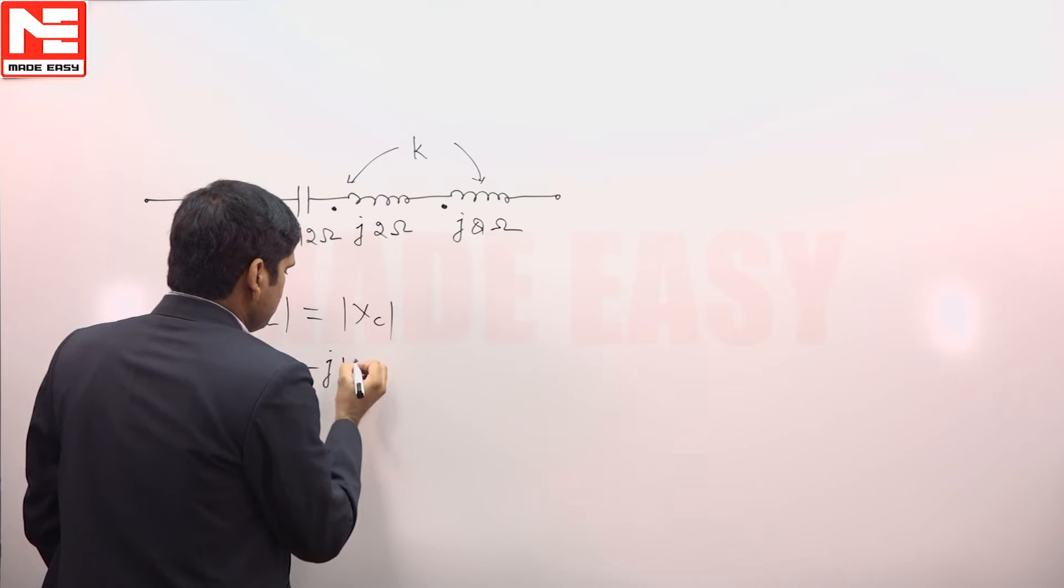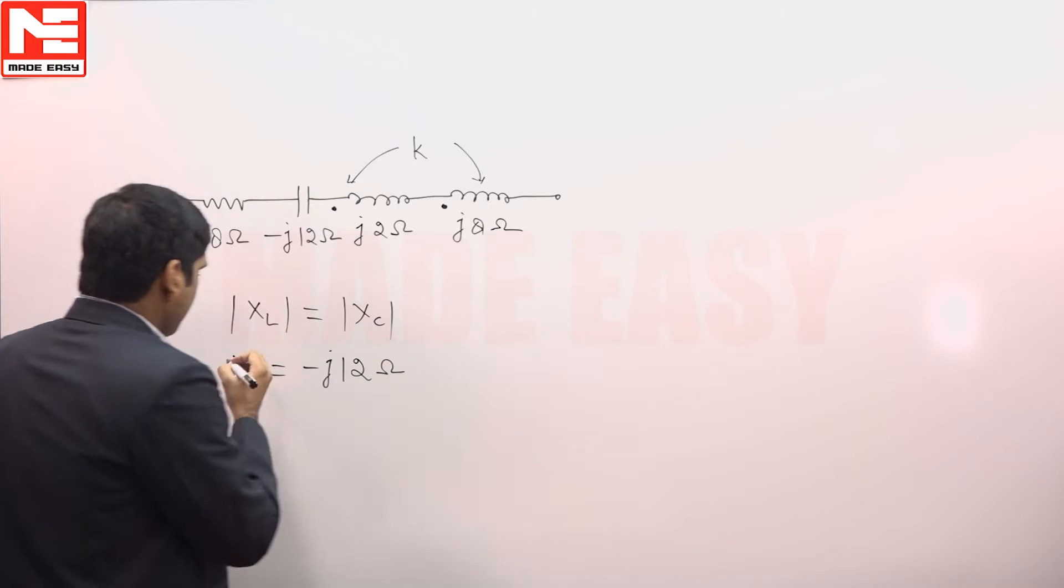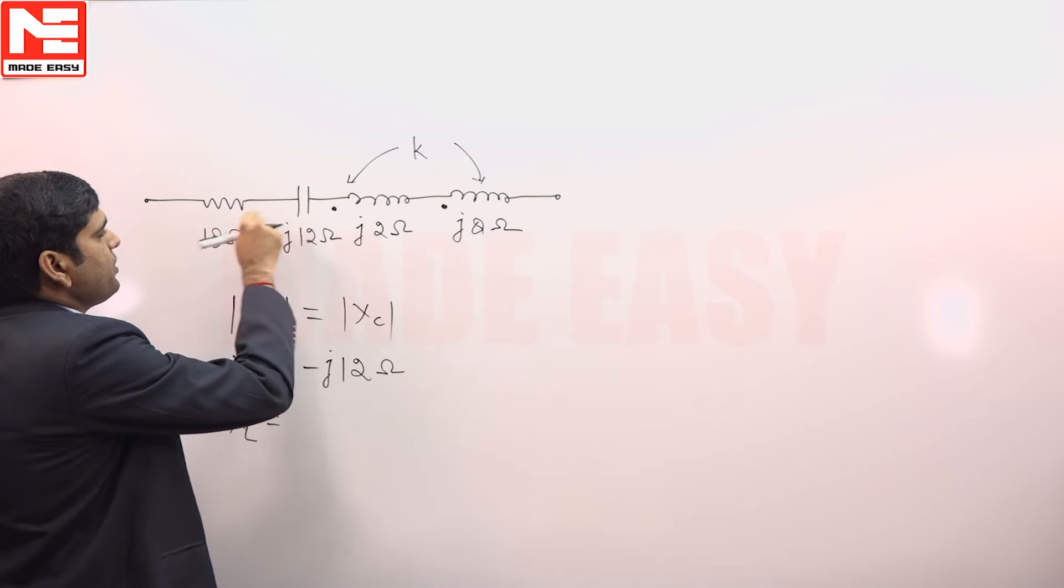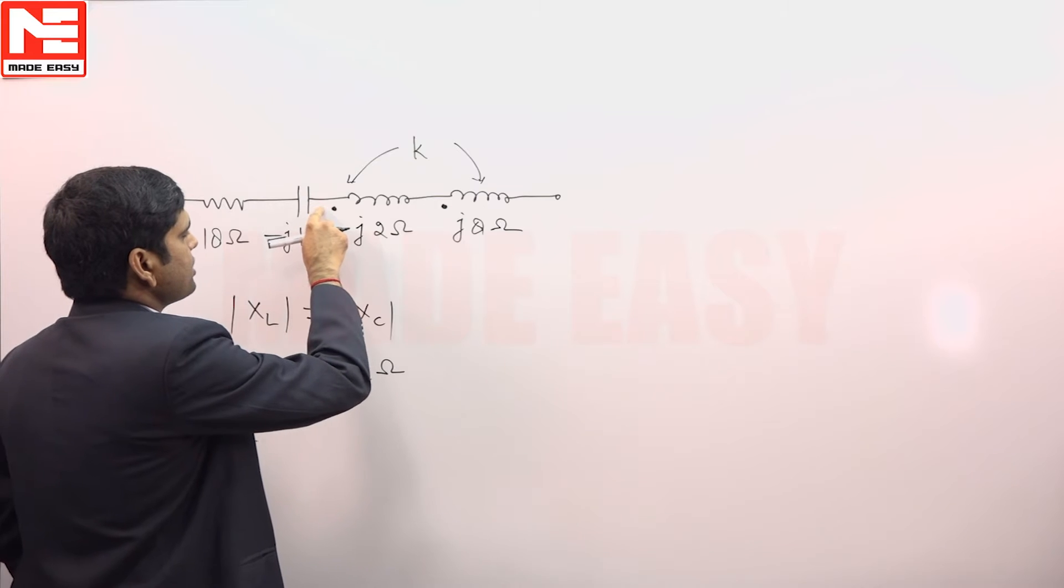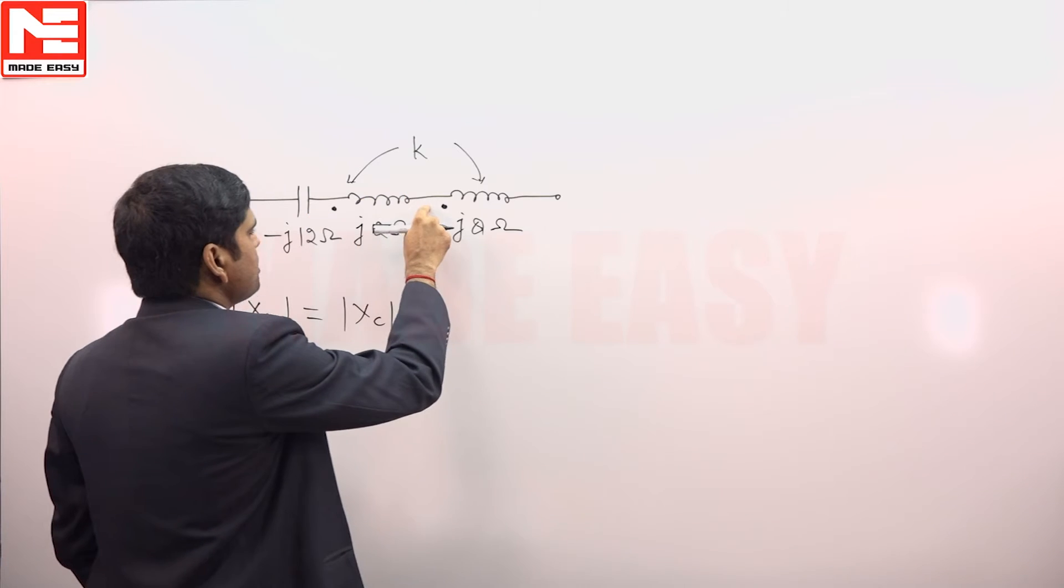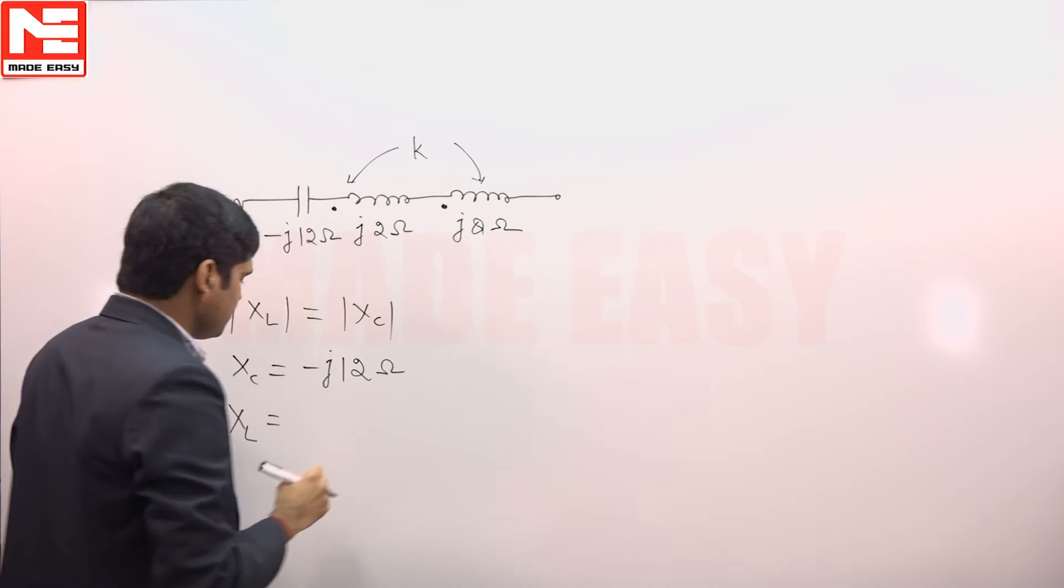That is -j12 ohm. And XL is equal to - if we enter the current like this, the current is entering at this dot and also entering at this dot, so both of these are in aiding mode.